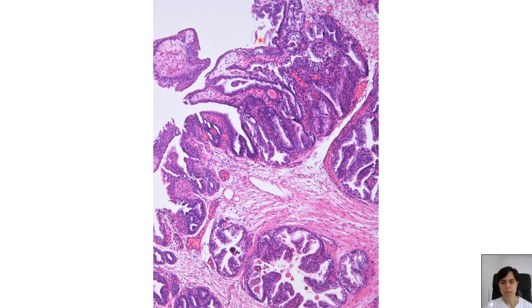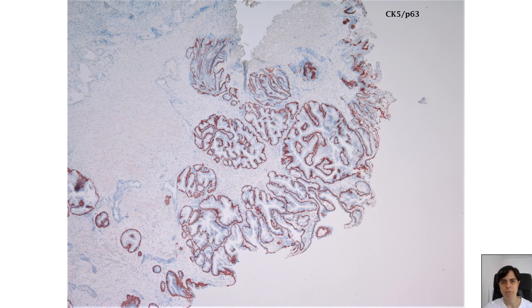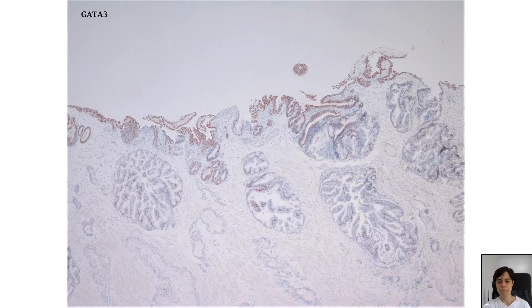Benign prostatic epithelium lining delicate papillary projections with true fibrovascular cores. On stains: PSA beautifully highlights the luminal cells of the prostatic epithelium. A combination of CK5 and p63 labels the retained basal cell layer in a continuous fashion, highlighting the benign nature of the prostatic epithelium. AMACR is negative again. GATA-3 shows, in this example, a bit more intermixed urothelium with the benign prostatic epithelium.